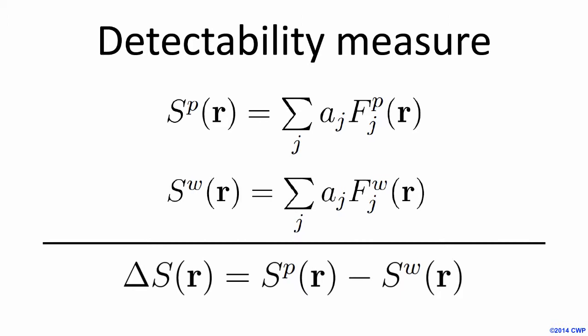There are several different measures of detectability in CSEM, but we chose to use the difference. This is the difference between the weighted response from the model with the reservoir, often called the pay field, denoted here as S superscript P, and the weighted response from the model without the reservoir, called the wet field, denoted here as S superscript W. What we want to do is maximize the difference between those two weighted responses, which I'm calling delta S.